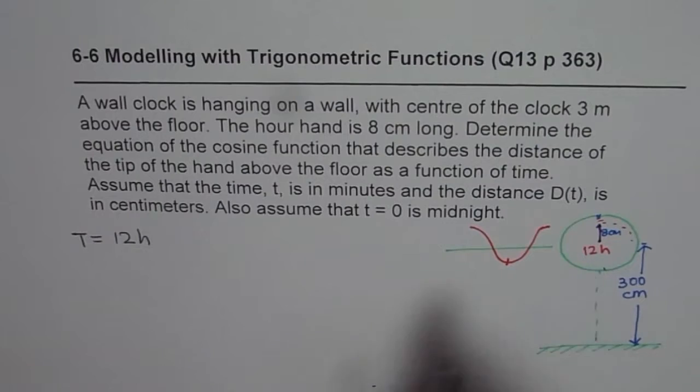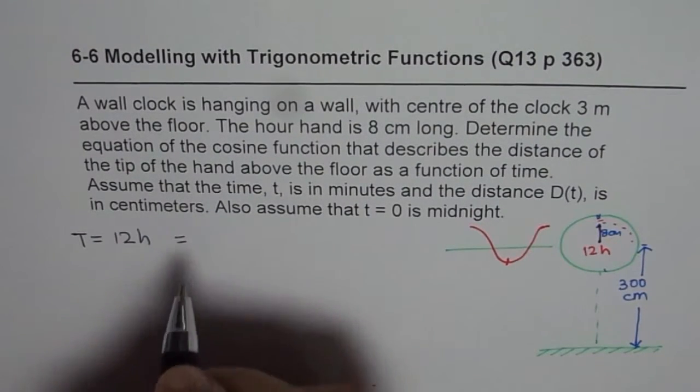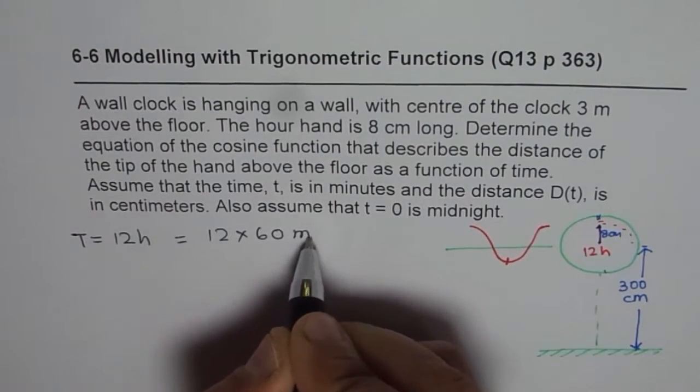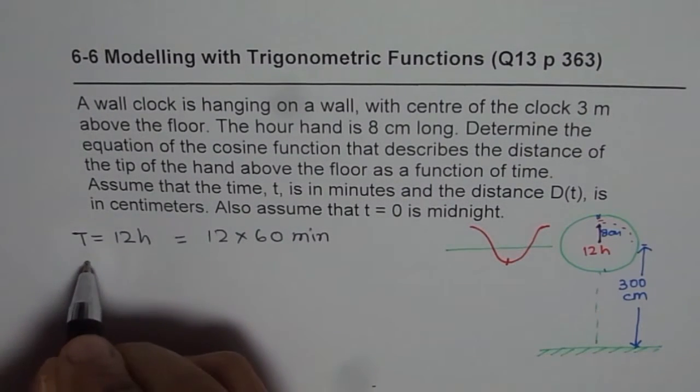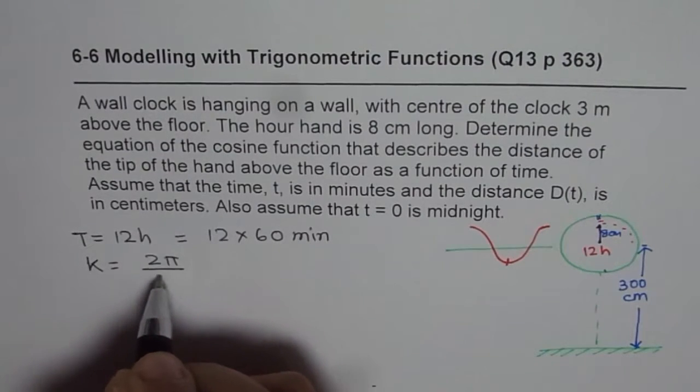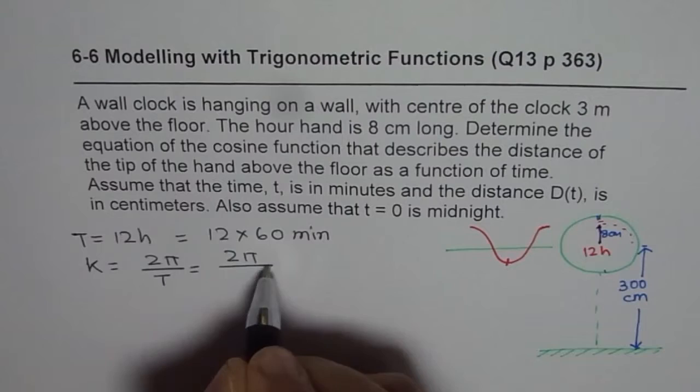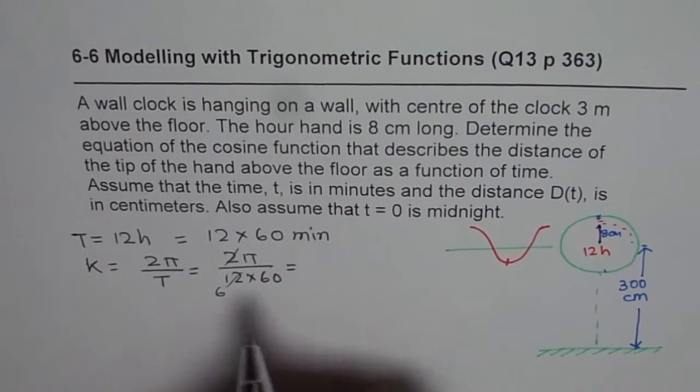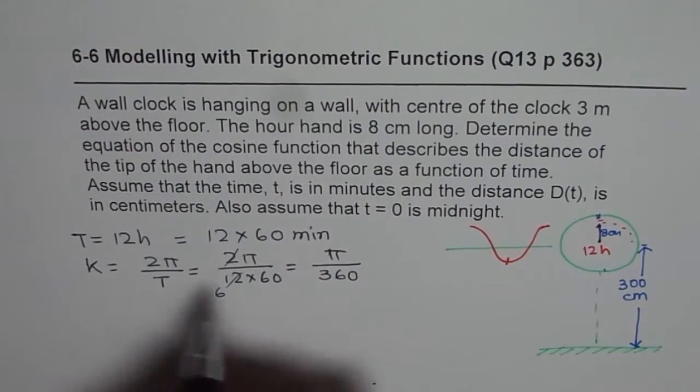If you want to convert that to minutes, you need to multiply by 60 minutes. So it becomes 12 times 60 minutes. So that is the time period. Now if time period is this much, the value of k will be 2π by T. So that should be 2π by 12 times 60. So that goes 6 times. So we have π over 360 as the value of k.